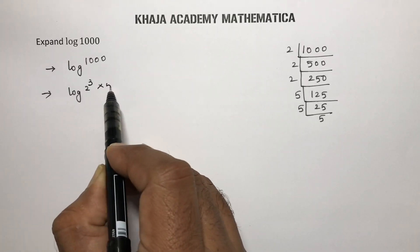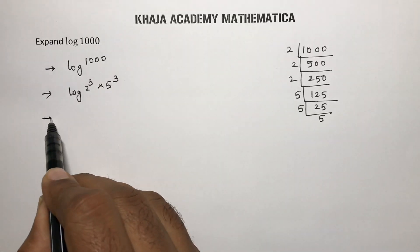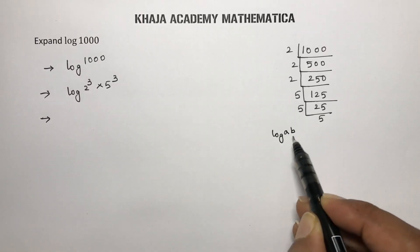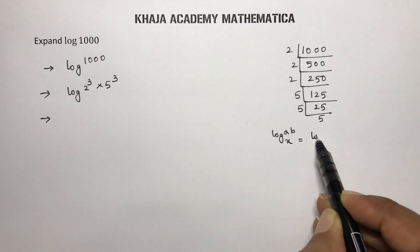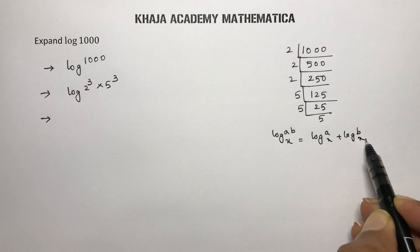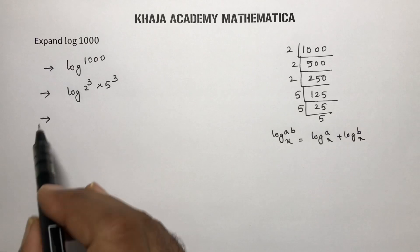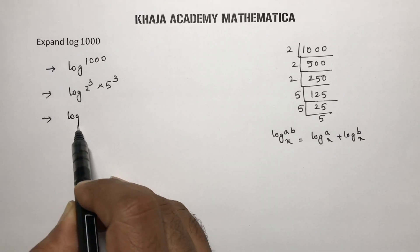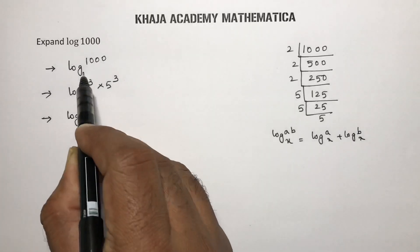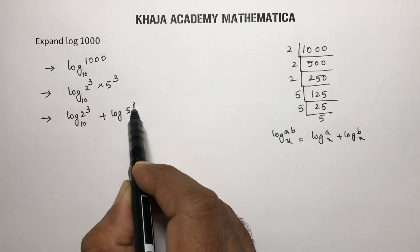Now we have log of 2 power 3 into 5 power 3. Here we use the logarithm of a product: log(a·b) to the base x is log a to the base x plus log b to the base x. So we get log 2 cube to the base 10 plus log 5 cube to the base 10.